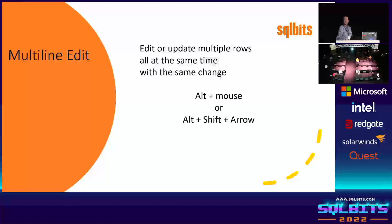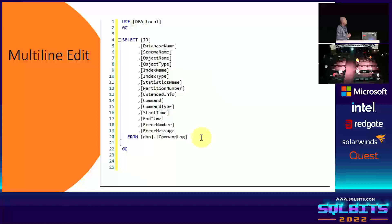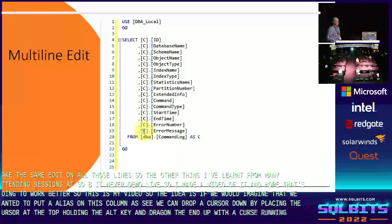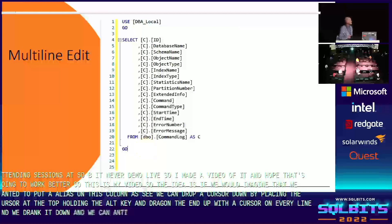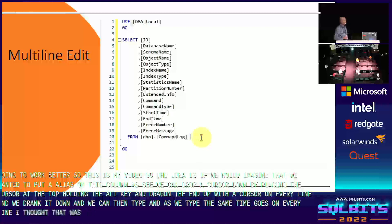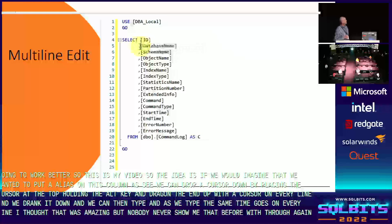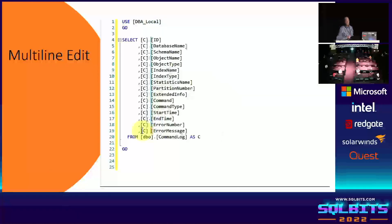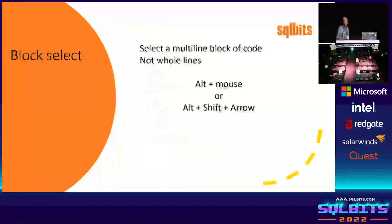The idea is if we want to put an alias on a column — say 'seep' — we can drop a cursor down by placing the cursor at the top, holding the Alt key, and dragging the mouse down so we end up with a cursor on every line. We can then type, and what we type appears on every line simultaneously. I thought that was amazing because nobody had ever shown me that before. It saves so much time.